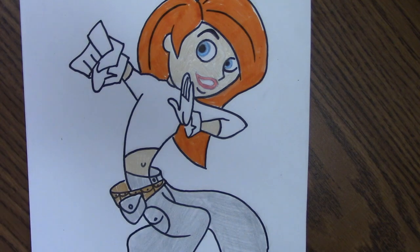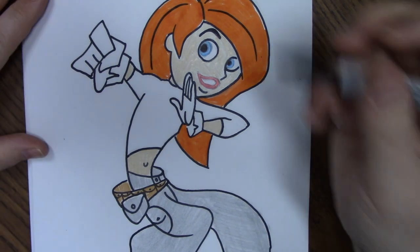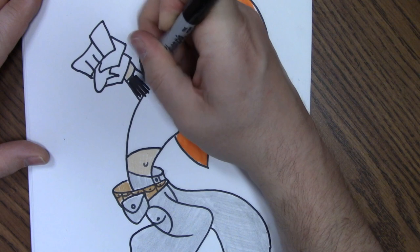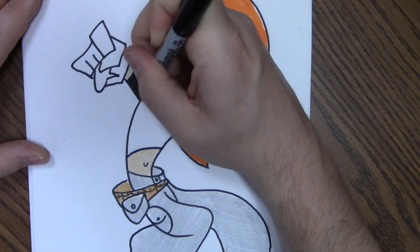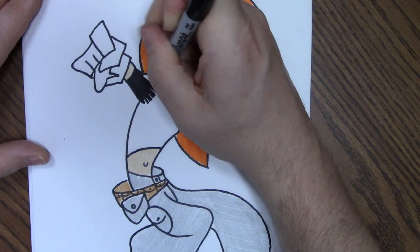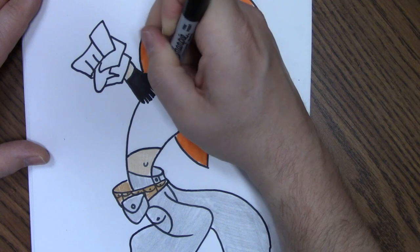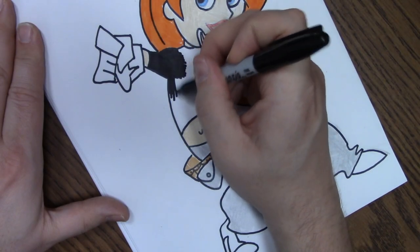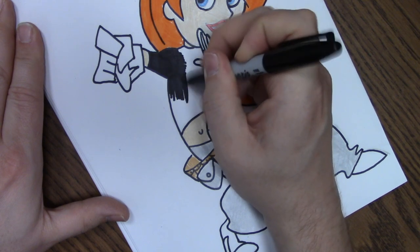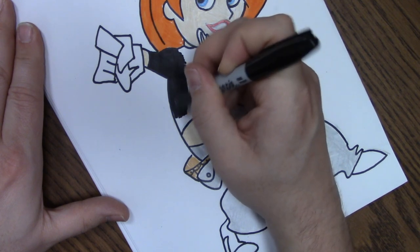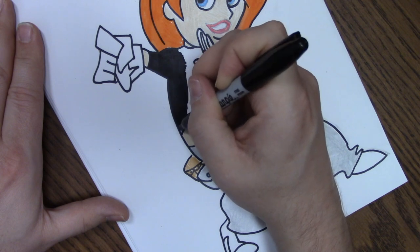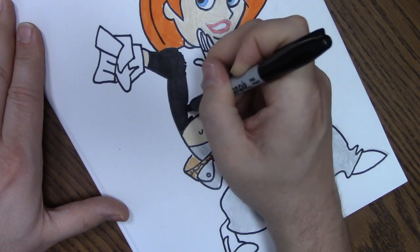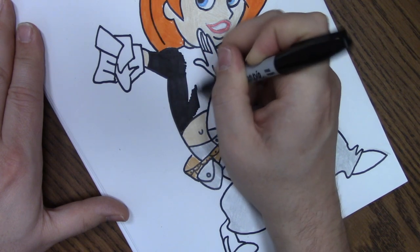We need black for her shirt. We're pretty much just going to use our permanent marker. Just be careful when you're drawing with this. Especially if you're using a lot of it, it could bleed through and stain whatever you're drawing on. So make sure you have a couple of sheets of paper underneath, or some sort of place mat.